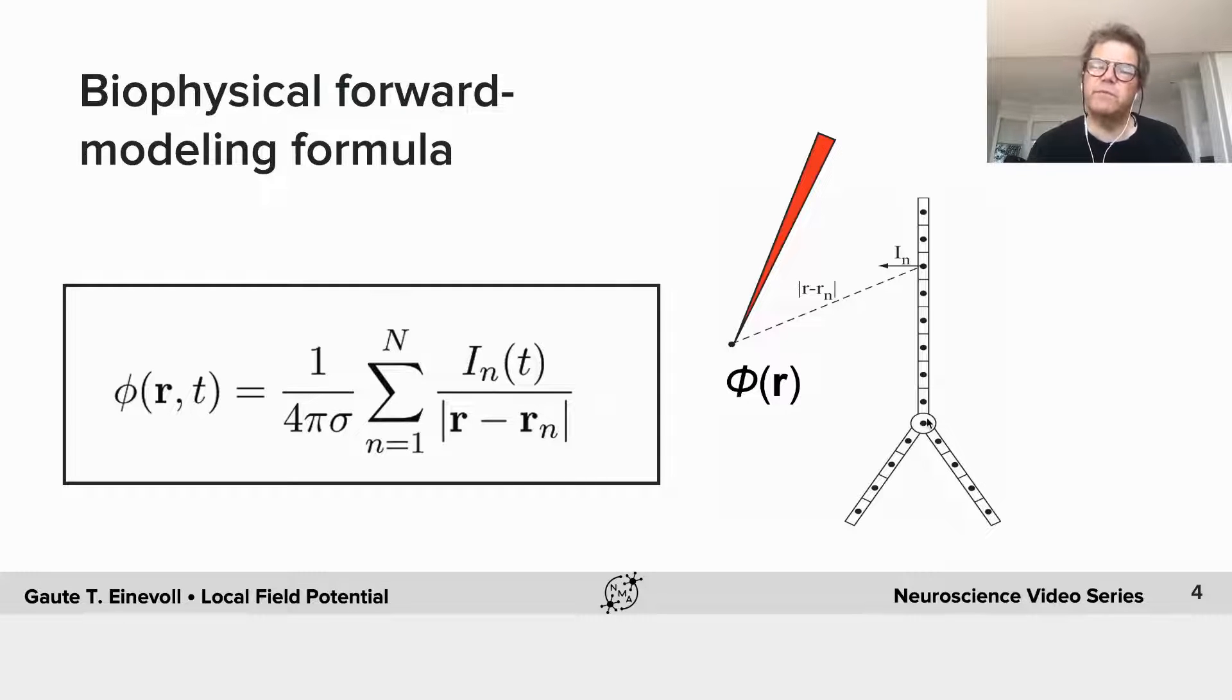When you do these kind of simulations, you also, as a sort of side product, you get out all these transmembrane currents in these different parts of the neuron, different compartments. And if you know these, or if you have computed these, then you can compute the potential recorded at essentially any extracellular position in the brain.